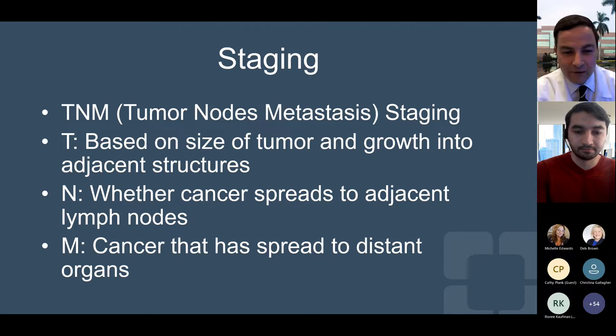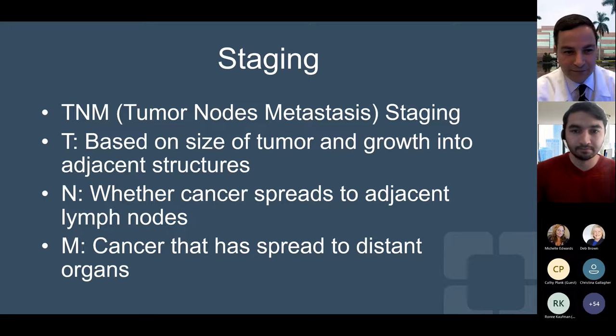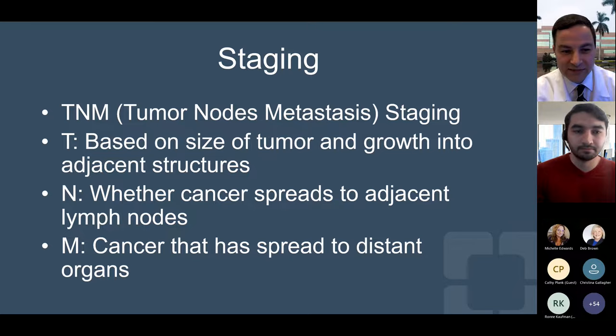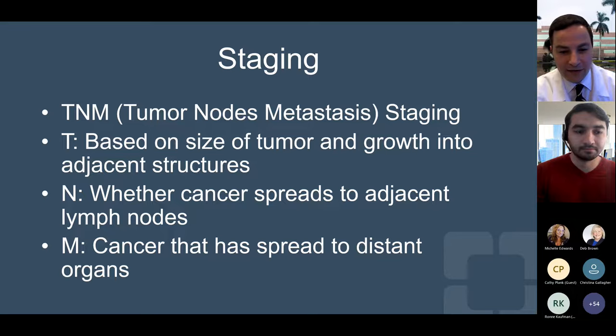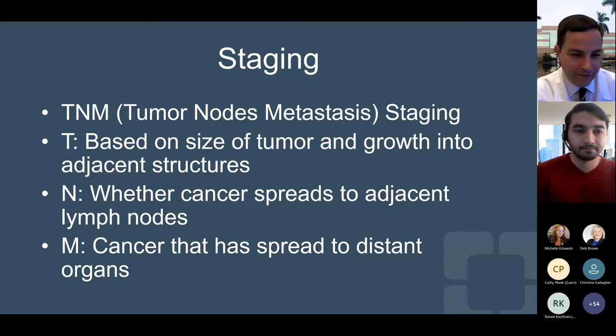The most common way that we classify stage is by TNM staging, where TNM stands for tumor, nodes, metastasis. T or tumor is primarily based on the size of the primary tumor, as well as additional factors including growth of the tumor into adjacent structures. N or nodes is determined by whether cancer has spread into adjacent lymph nodes — a lymph node is an organ throughout the body that is part of your immune system, and cancer can spread along the lymphatic channels to the lymph nodes. And M for metastasis — this is cancer that has spread to distant organs.